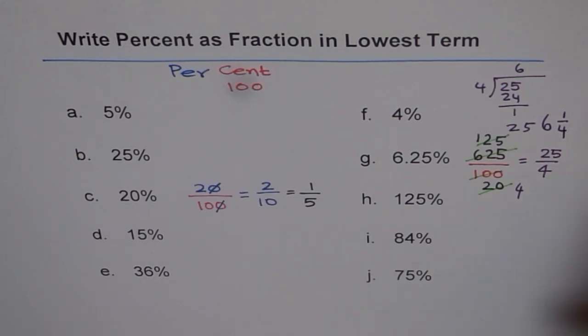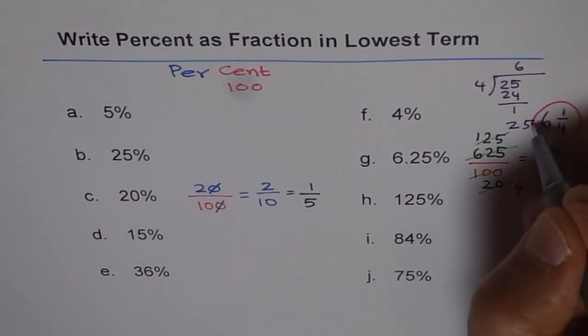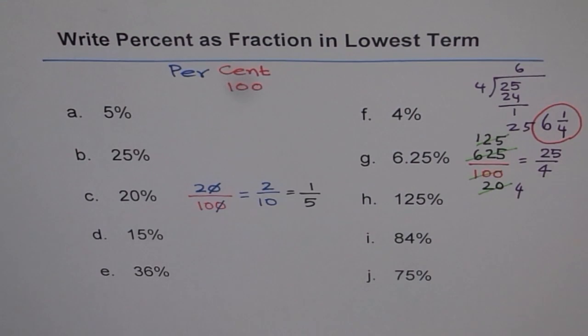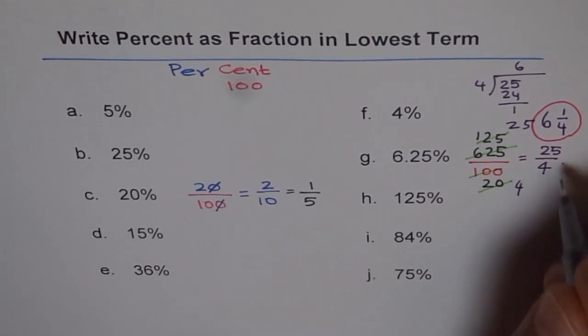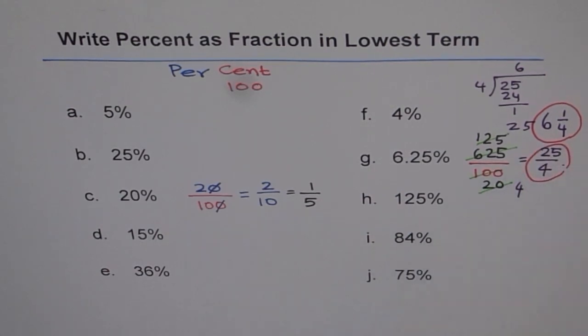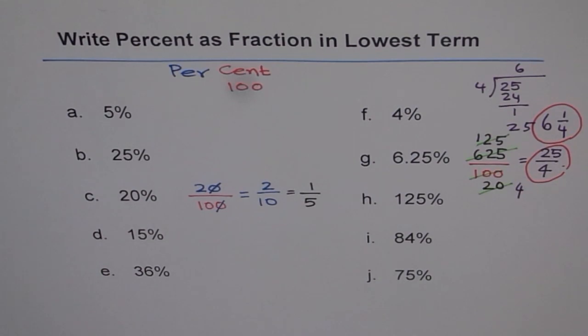So that is mixed numbers. And this one is improper fraction. So that is how you can simplify the fraction and write down in the lowest terms.